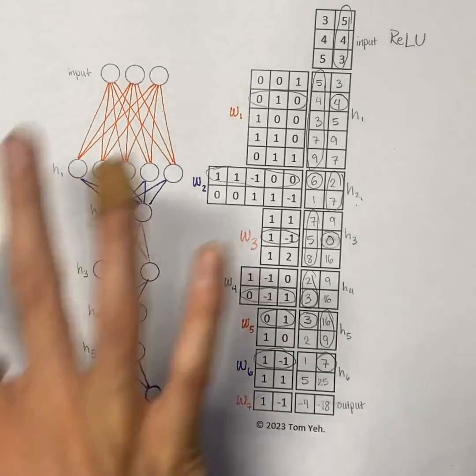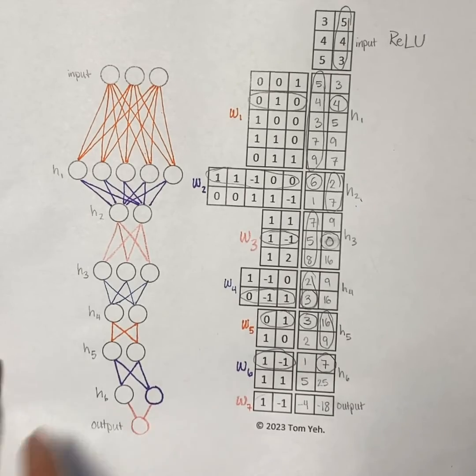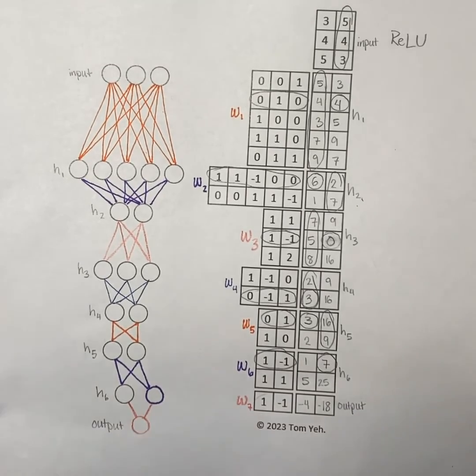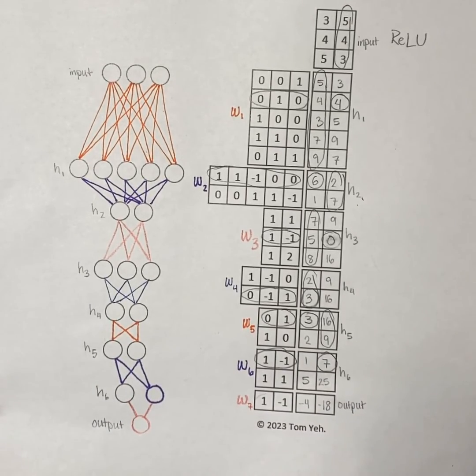So that's the end of the calculation that we do here. We've gotten a value for our output node. Let me know what you thought, and I hope that this was a helpful explanation.